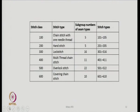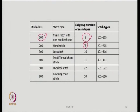This table gives an idea of different stitch classes and their subgroups. Stitch class 100 is chain stitch with one needle thread — there are 5 subgroups. Stitch class 200 is hand stitch — 5 different subgroups. Lock stitch has 16 subgroups. Stitch class 400 is multi-thread chain stitch with 11 subgroups. Class 500 is overlock stitch with 22 subgroups, and class 600 is covering chain stitch with 10 different subgroups.